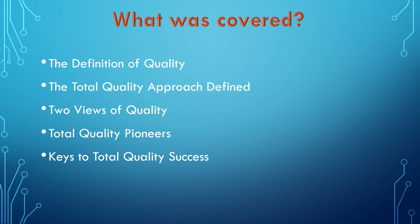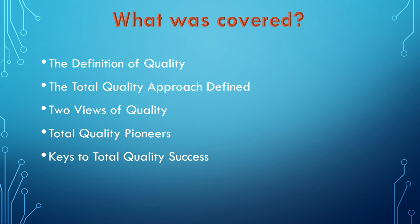We have come to the end of the presentation. We talked about the definition of quality and how quality is basically defined by the customer. We also talked about the definition of the total quality approach and two different views of quality — the traditional view versus the total quality model. We talked about three important pioneers of total quality: Crosby, Deming, and Joseph M. Juran, and how they contributed to quality. We also talked about keys to total quality success and some of the mistakes that senior management must avoid in order to succeed in total quality.